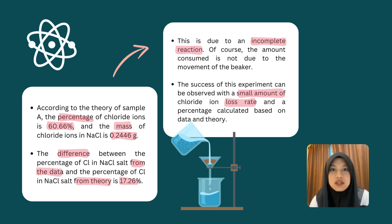Sample A has a chloride ion loss of 17.26%, which is due to an incomplete reaction. The success of this experiment can be observed through the small amount of chloride ion loss rate and the percentage calculated based on experimental data compared to theory.